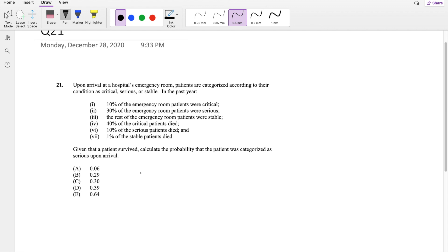So the question is asking, given that the patient survived, what is the probability that the patient was categorized as serious upon arrival? So serious given survived. This is equal to the probability that they are serious and survived divided by the probability that they survived.